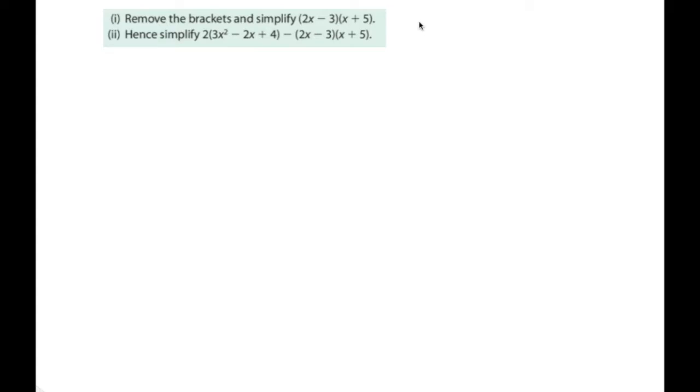So we've done addition and subtraction of different constants and variables and the coefficients beside the variables. Now we have to look at if we have an expression that has brackets like this one here. We want to simplify this so we're going to have to multiply it out, and then if there's any adding or subtracting to be done we can do it then.